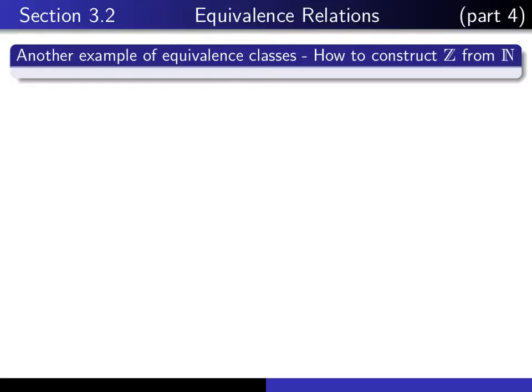This is the fourth in our series of lectures on equivalence relations. In this lecture I'm going to talk some more about equivalence classes with respect to a different equivalence relation, and I'm going to use it to show you how one can construct from scratch the set of all integers, making use only of the natural numbers.